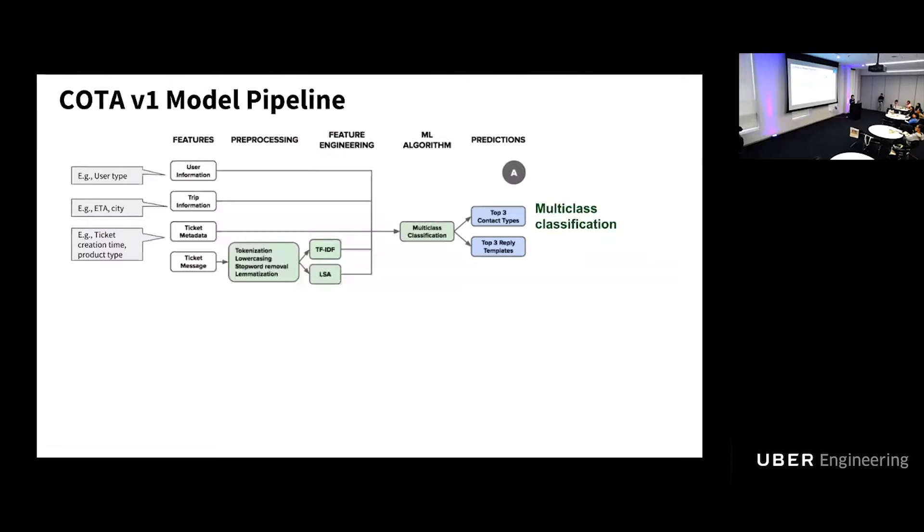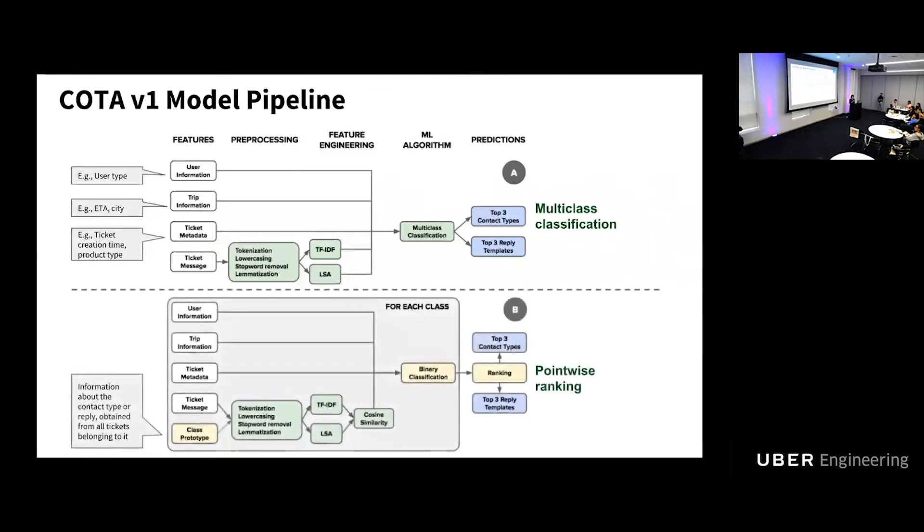And more importantly, we extract natural language processing features from the ticket message written by our user. To do so, there are several preprocessing steps we will need to firstly go through, such as tokenization or stopword removal. After that, we will extract low-level NLP features such as term frequency inverse document frequency, as well as high-level NLP features such as latent semantic analysis. Once that's done, all these features fit into the multi-class classification algorithms such as random forest, and the model is built to predict content type or reply template. This is the first approach we try. However, the model performance is not as good as we expected because we found that there are thousands of classes we need to predict, so that makes the case difficult. So we take a tweak to this problem and convert it into a binary classification and ranking problem.